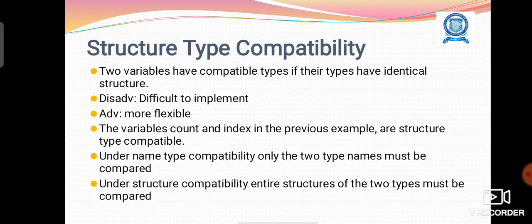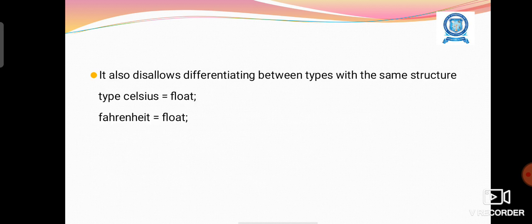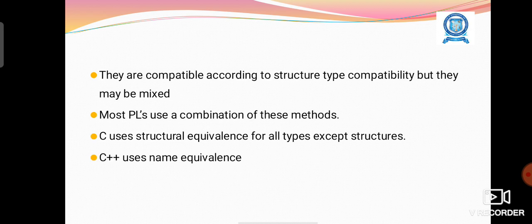Structure type compatibility: Two variables have compatible types if their types have identical structure. However, it is difficult to compare two structures because they may have different field names, they may be arrays with different ranges, or they may be enumeration types. They are compatible according to structure type compatibility but they may be mixed.